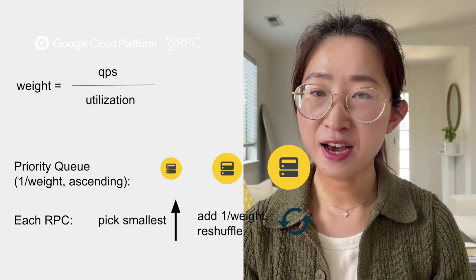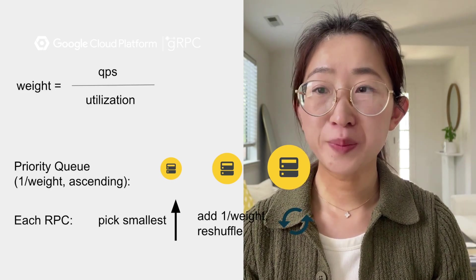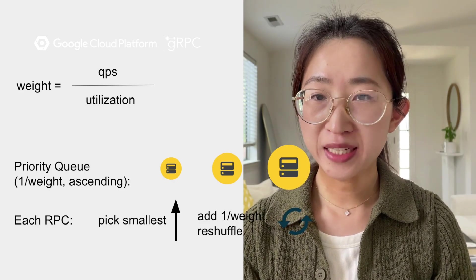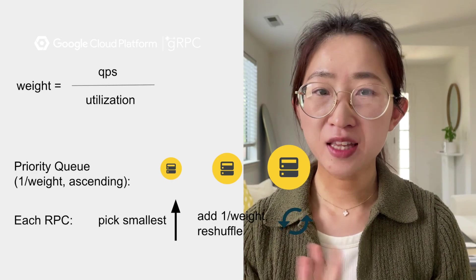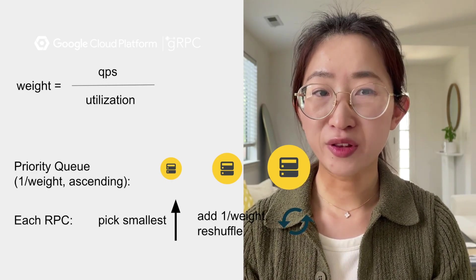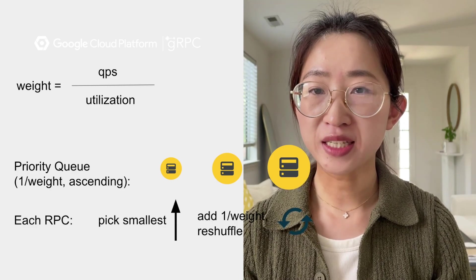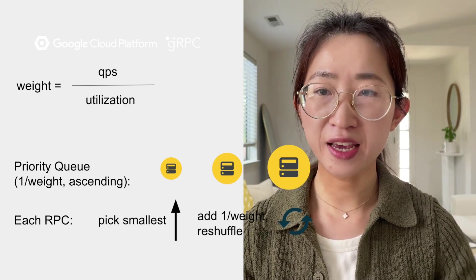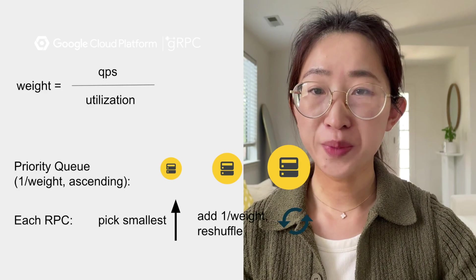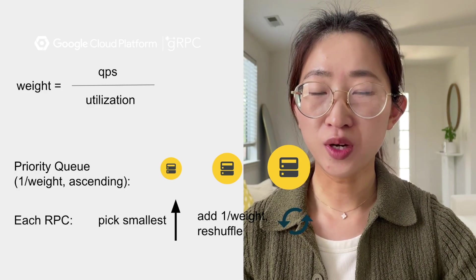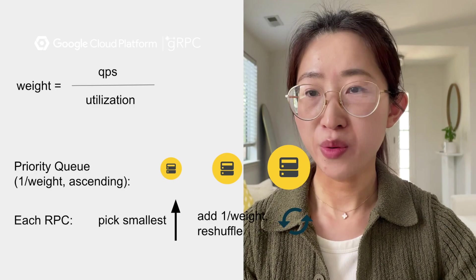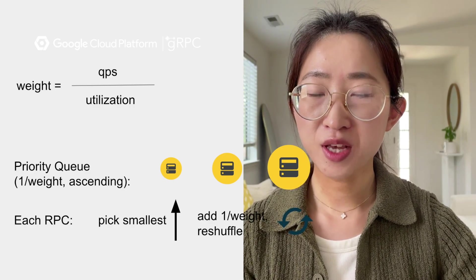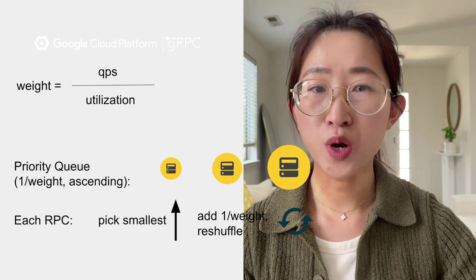Applying this earliest deadline-first scheduling algorithm, GRPC implemented the weighted round robin algorithm. Each backend weight is calculated from this formula, considering QPS divided by utilization. The reverse of the weight is the period. We maintain a priority queue in ascending order of the deadline among all items, and we always pick the smallest priority in the queue. We then add its period, put it back to the priority queue, reshuffle, and do the next pick. In the end, the times that the backends are picked is proportional to its weight.